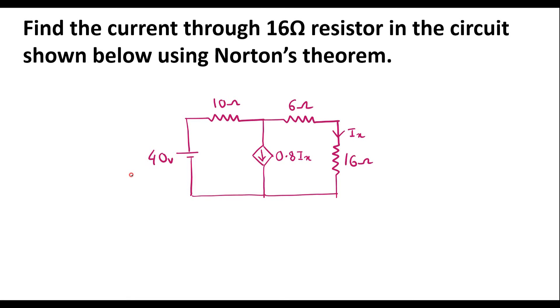In this video, I will consider one numerical on Norton's theorem: find the current through the 16 ohm resistor in the circuit shown below using Norton's theorem.